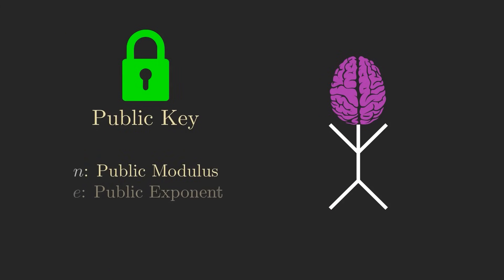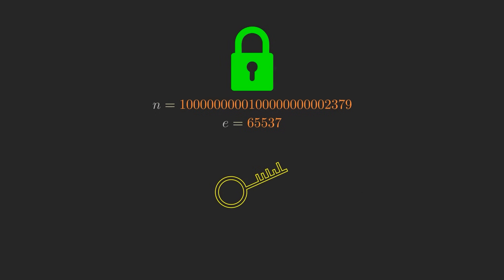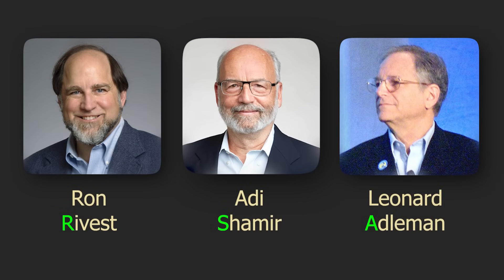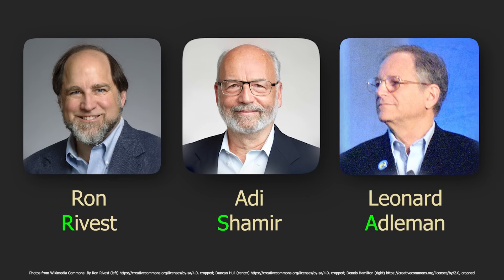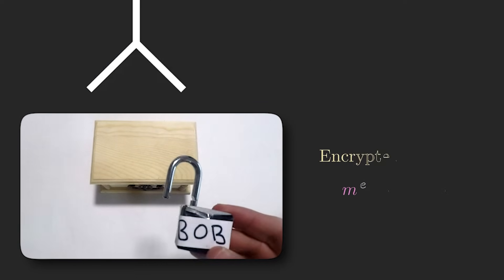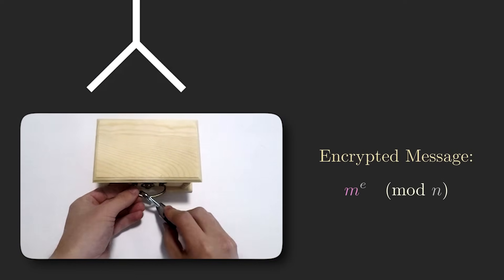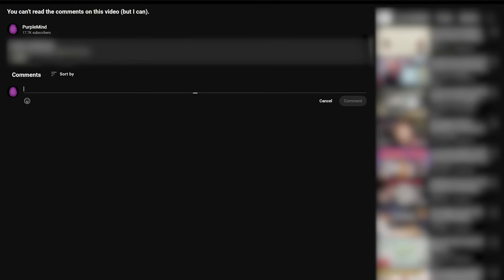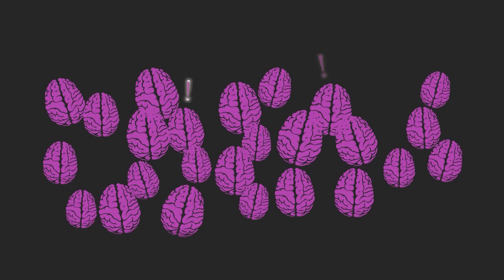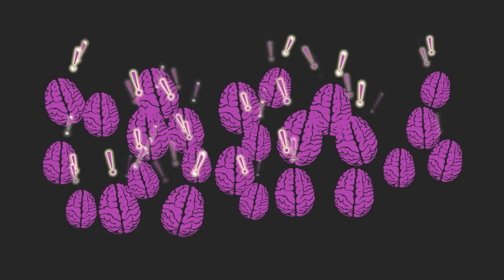Not only is this possible, but it's the backbone of pretty much all communication on the internet. One of the tools that makes this work is an incredible encryption method known as RSA encryption that allows us to send secret messages to each other over a public network. In this video, I'll show you how it works, and how to use RSA to send a secret message to me through the comments section. There's also a twist coming later that's going to make this whole thing a really fun community challenge, so make sure to stick around to the end if you want in on it.